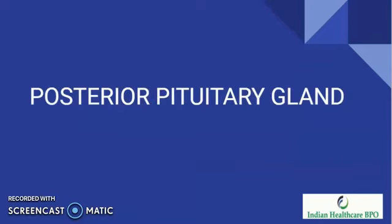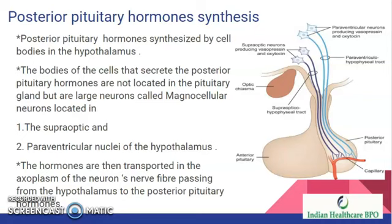In this video I am going to talk about the posterior pituitary gland. Posterior pituitary hormone synthesis. The posterior pituitary hormones are synthesized by the cell bodies in the hypothalamus. The cell bodies that secrete the posterior pituitary hormones are not located in the posterior gland, but they are large neurons called magnocellular neurons, located in the supraoptic and paraventricular nuclei of the hypothalamus.